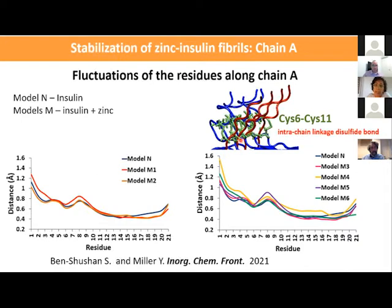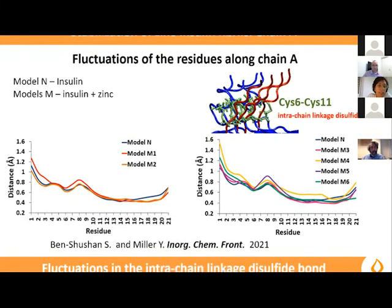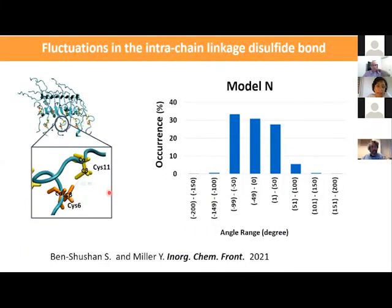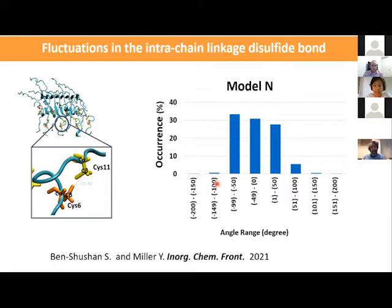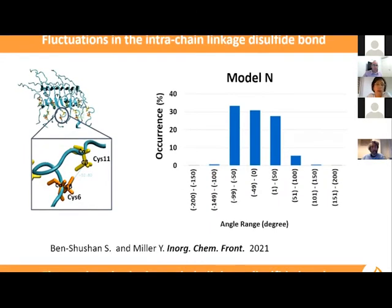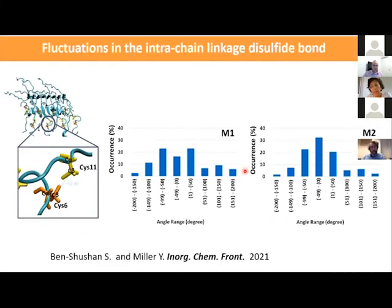To understand the dynamics underlying these relatively high fluctuations, we computed the dihedral angles of residues 6 to 11 in chain A. In the absence of zinc ions, the insulin fibrils show a relatively narrow distribution of these dihedral angles. However, when zinc ions are added — for example, bound in chain A — the dihedral angles show a relatively wide range of distribution. This indicates greater dynamics and fluctuations of that specific disulfide bond region.